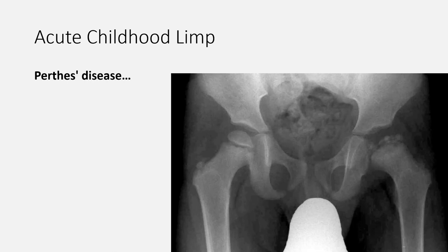Another cause of acute childhood limp is Perthes disease — idiopathic avascular necrosis of the developing femoral head. The child will typically present with limitation of hip rotation and a subacute limp. The child is systemically well with no other joint involvement. Most children with Perthes disease have good outcomes, but long-term complications may include chronic pain and osteoarthritis.